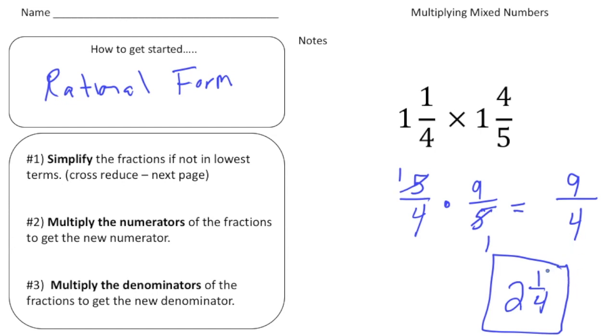Alright, so the steps are pretty simple. First make the mixed numbers improper. Then cross reduce if you can. And then multiply the numerators, and then multiply the denominators. And then finally you'll have your answer.